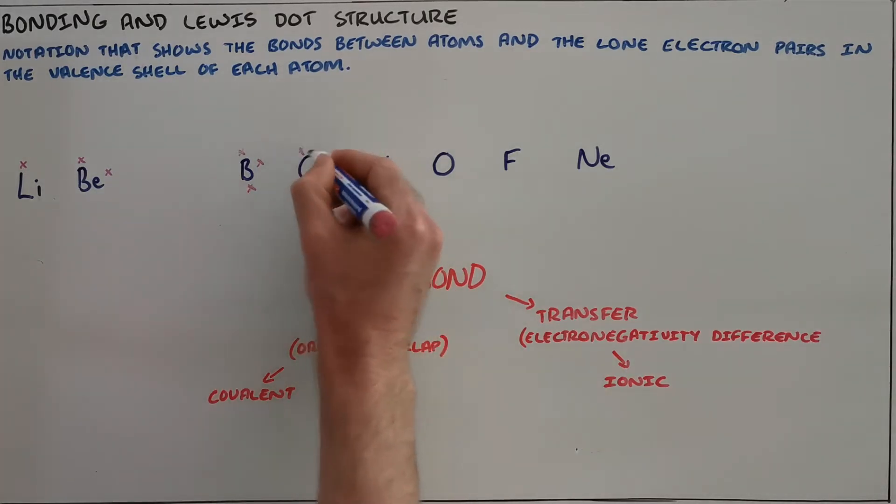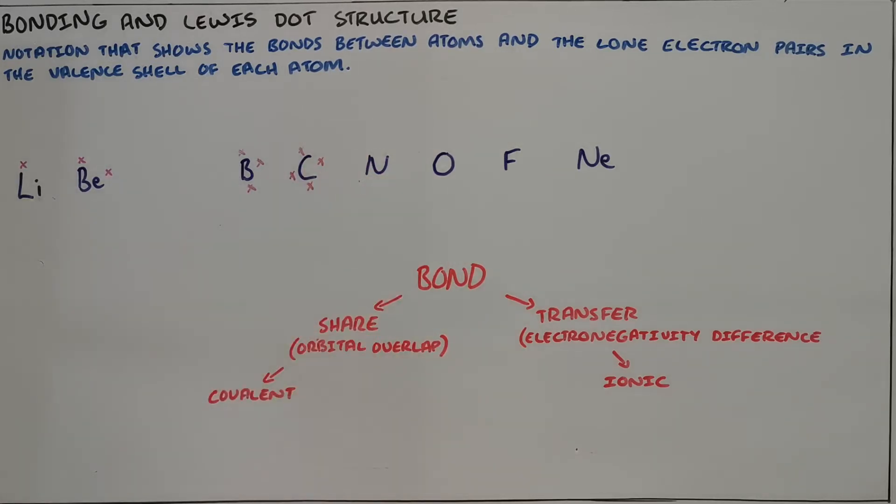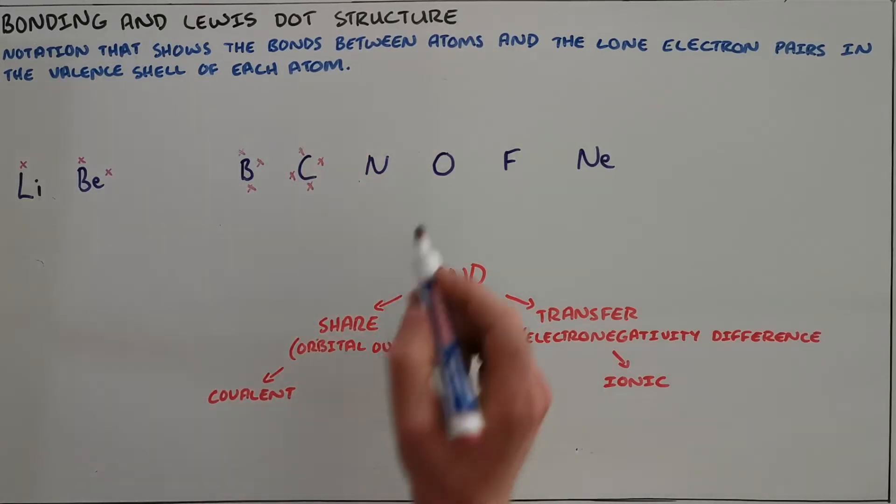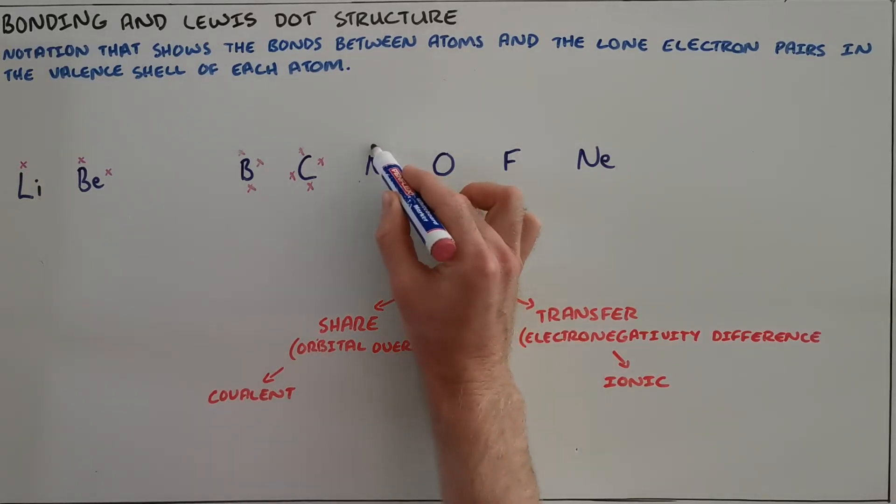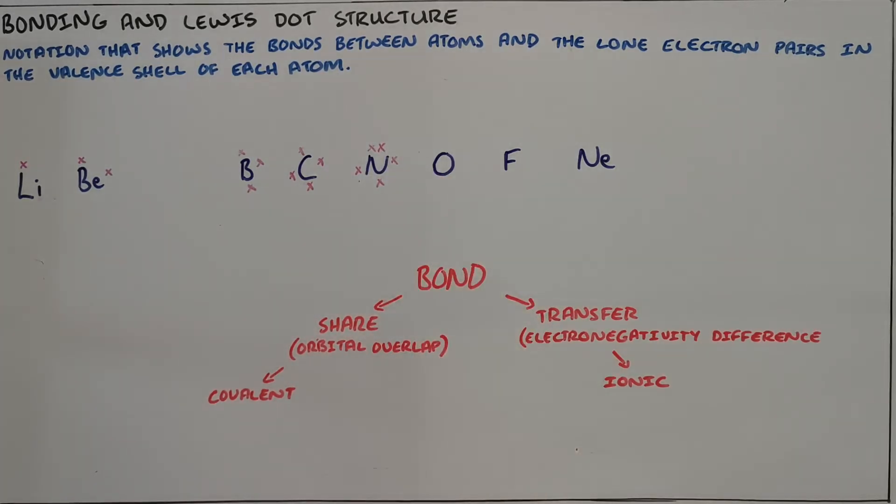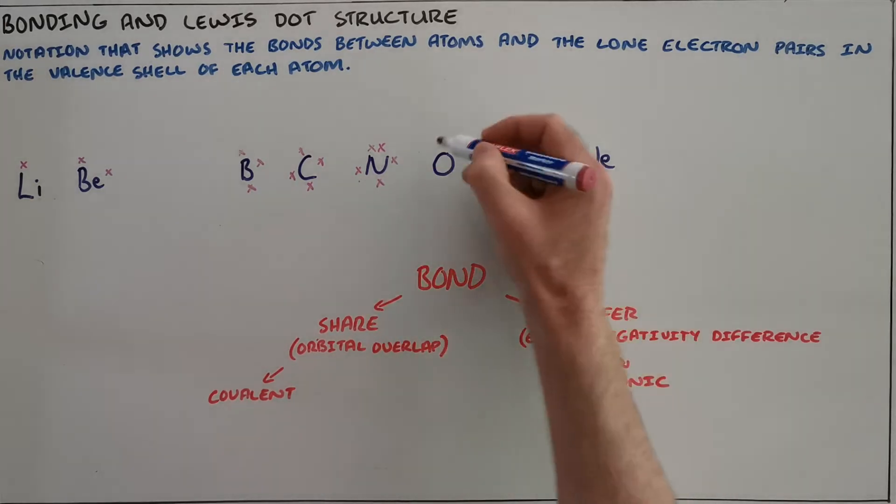Carbon, being in group 14 or group 4, has four valence electrons, each one in its own orbital. Nitrogen, being in group 15, has five valence electrons, and here we see that we first fill each orbital and then we place a second electron in one of the orbitals.